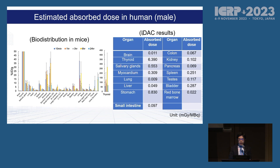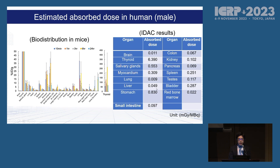This is an estimated absorbed dose in humans from biodistribution data in mice. In mice, you can see high physiological accumulation in the thyroid, similar to iodine, and also high accumulation in the stomach contents because the stomach also expresses sodium iodide symporter. As a result, you can see high absorbed dose in the thyroid followed by the stomach, and these are considered organs at risk in astatide therapy for thyroid cancer.